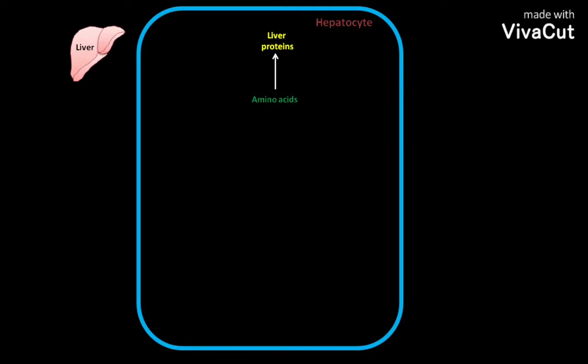These proteins have a relatively high turnover rate. The average half-life of these proteins is hours to days. Most plasma proteins are synthesized in the hepatocyte and are transported to the extracellular space. Some amino acids pass into the bloodstream.